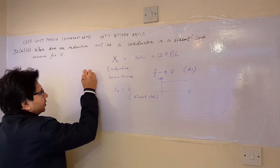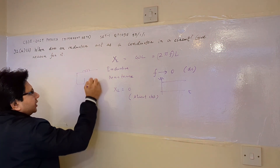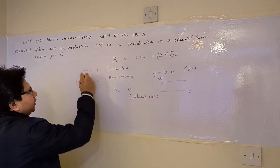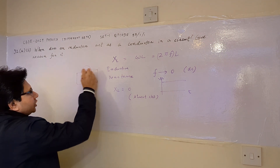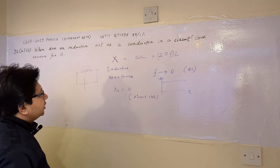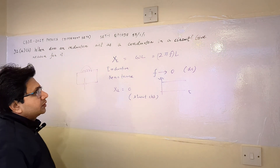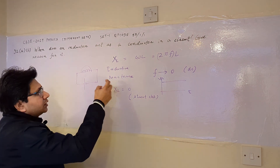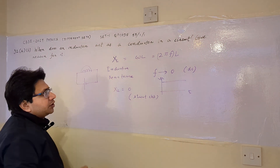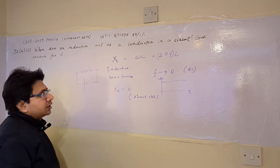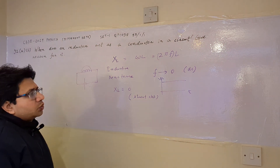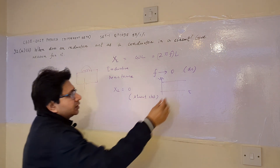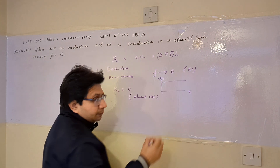So the inductor, if we apply a DC signal across it, it behaves as a short circuit. And short circuit means it acts as a conductor. So we can say that the inductor behaves as a conductor when the applied frequency is 0, that means when we apply the DC signal.